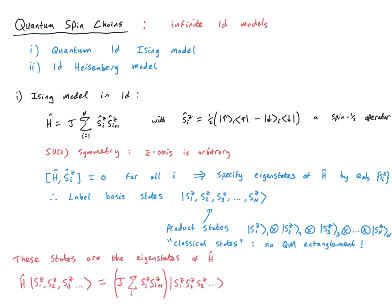The important thing is that these product state basis states are in fact eigenstates of the Hamiltonian. If we apply H-hat to one of these basis states, we get the state back again times an eigenvalue — the energy of that state. The energy involves the quantum numbers SiZ and S(i+1)Z. These are not operators — they are simply the quantum numbers for a given state. So we've actually found the solution of this model: the classical product states are eigenstates of the Hamiltonian, and every single product state has a specific energy we can write down.